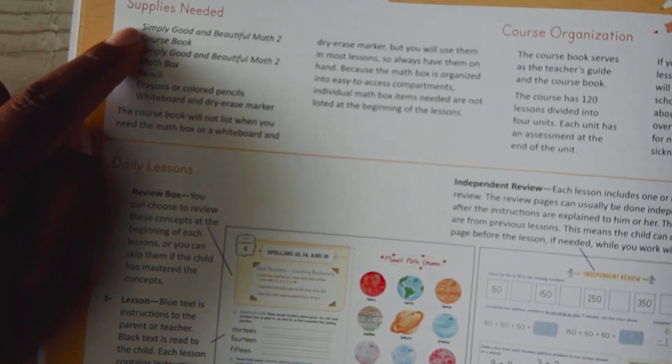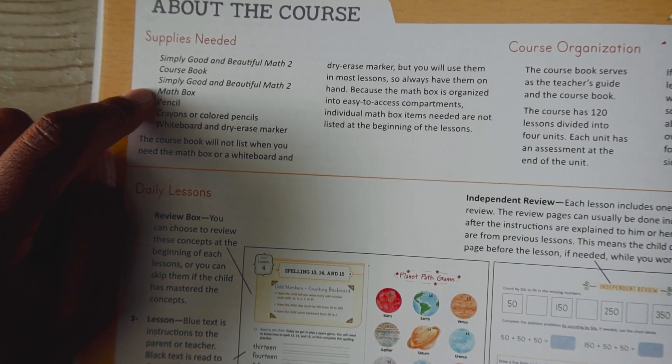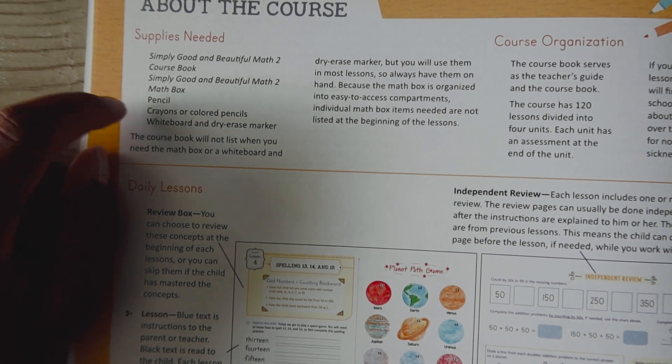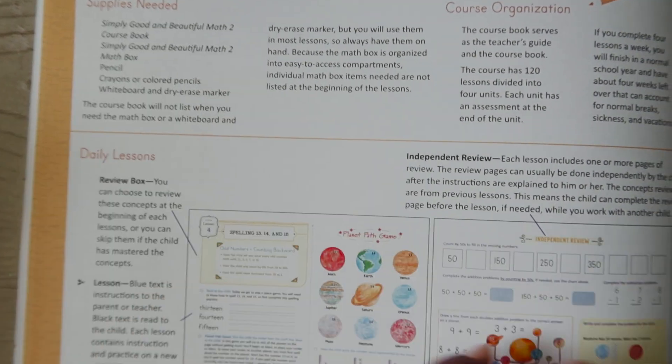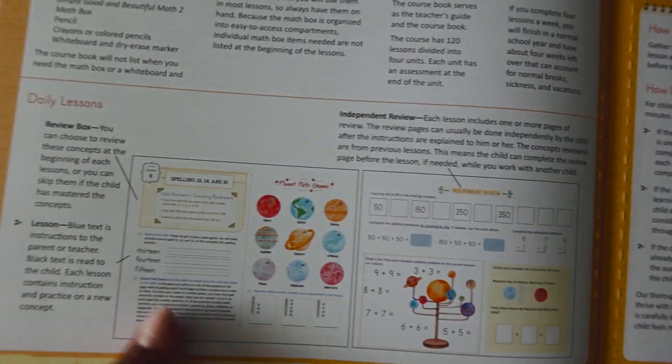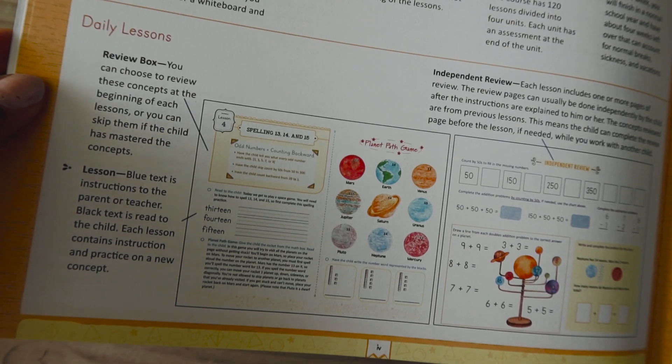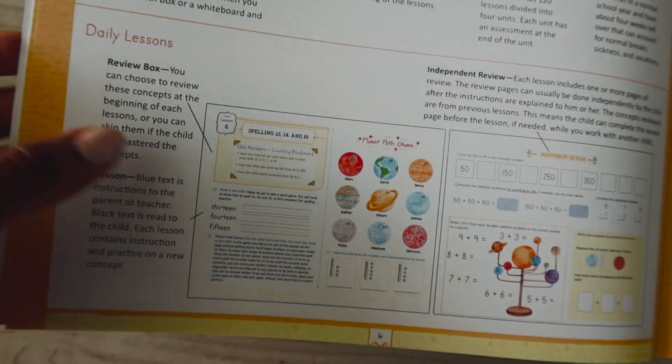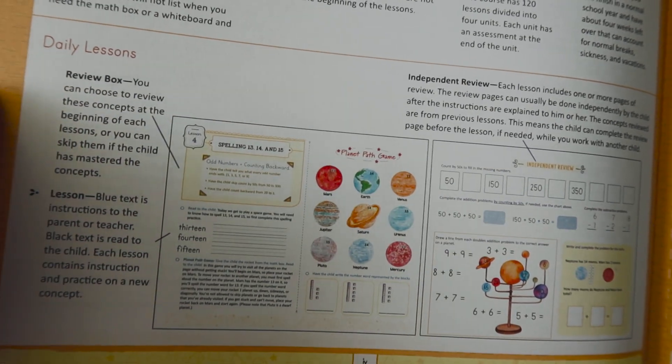It tells you the supplies that you'll need for this course which is the Good and the Beautiful math course book which is this. The math box which is what I just showed you. A pencil, crayons, or colored pencils and then a white or dry erase board. So that's what you need. Very simple.